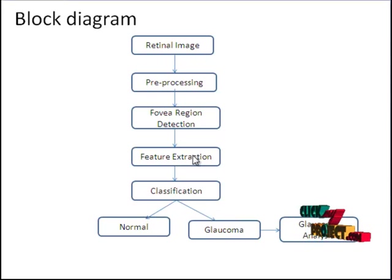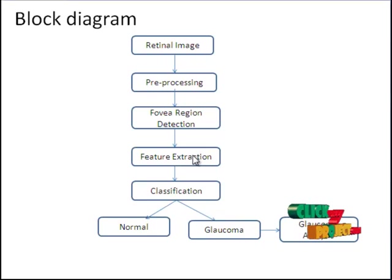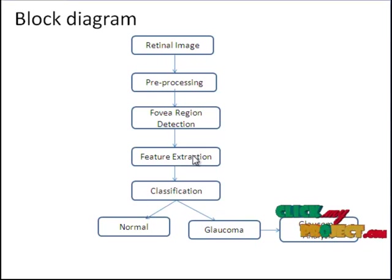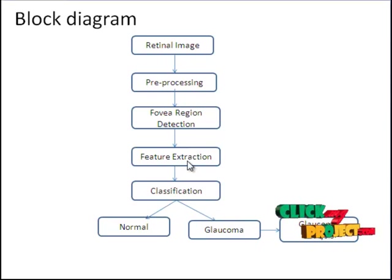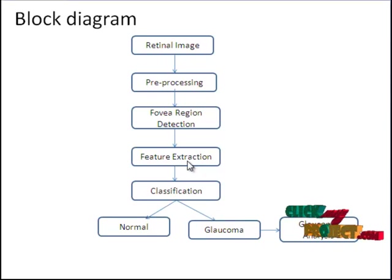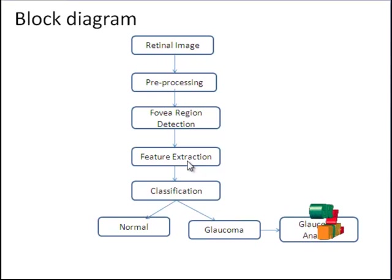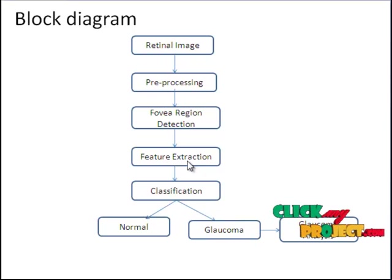In feature extraction, the gray level co-occurrence matrix (GLCM) is used to derive several statistical information of the image. The statistics provide information about the texture of the image, such as energy, entropy, dissimilarity, contrast, inverse difference, and correlation. This type of information is extracted from the feature extraction stage.